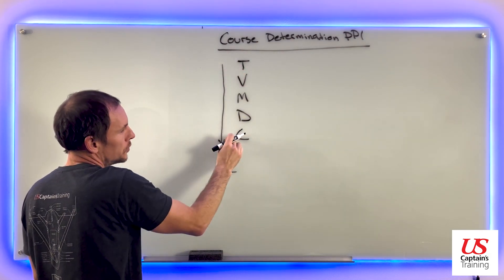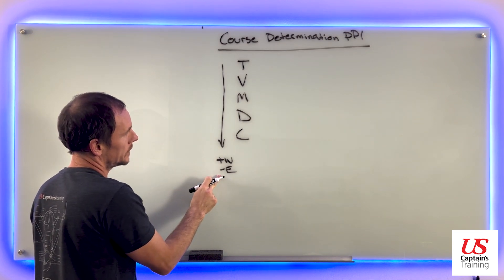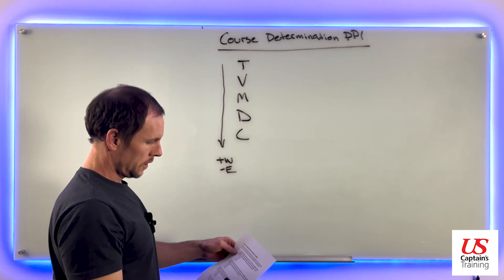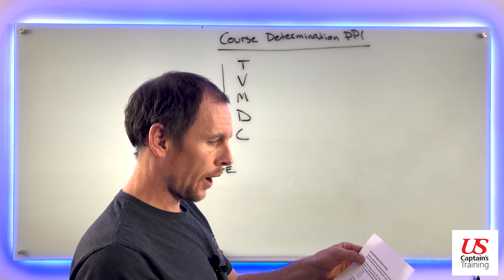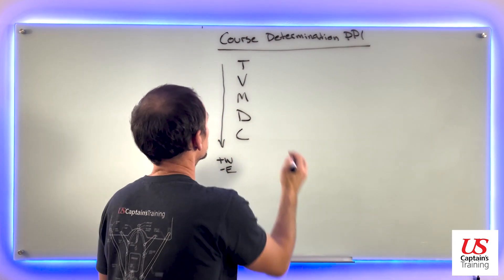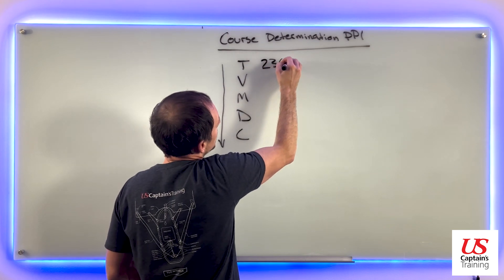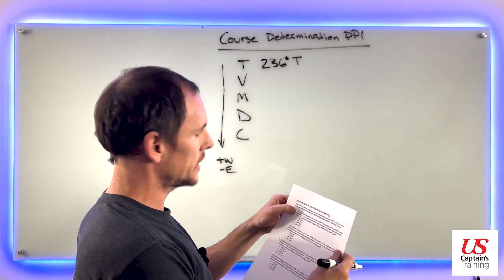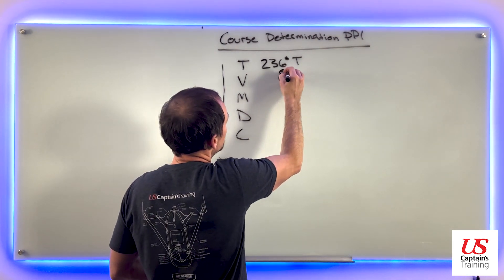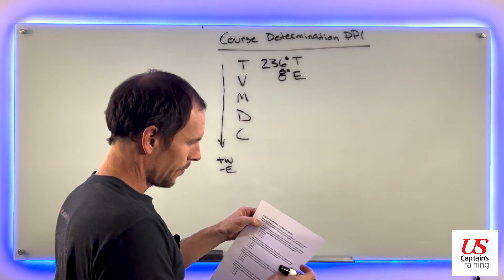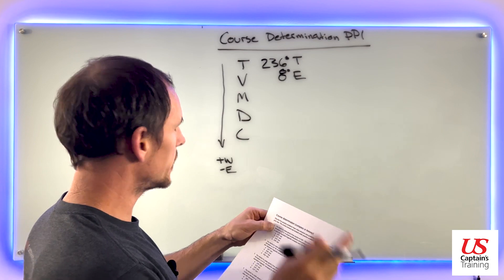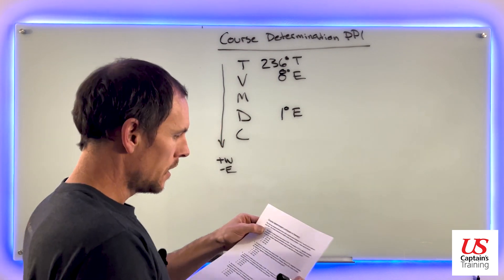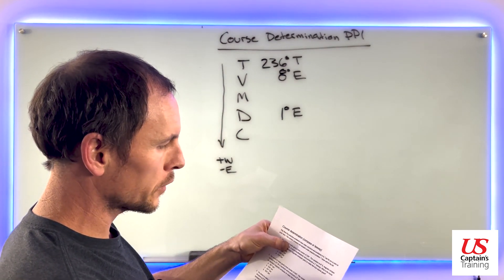So this is always going from true to compass. We add west, subtract east. In these problems, we're always going from true to compass. And the information given in the problem: true course 236 degrees, 236 degrees true. Variation is 8 degrees east. Variation 8 degrees east. Magnetic compass deviation is 1 degree east, 1 degree east.